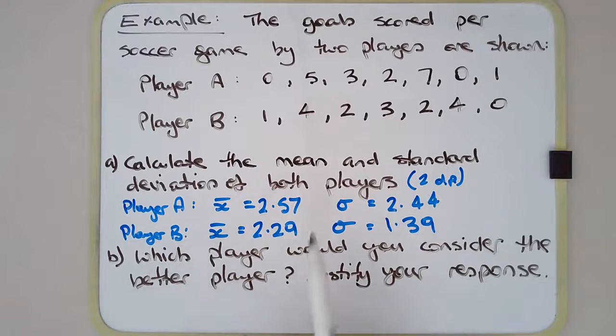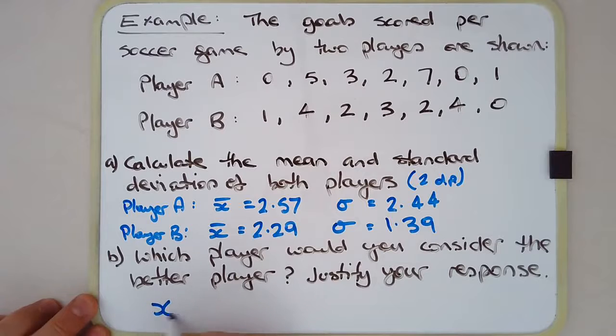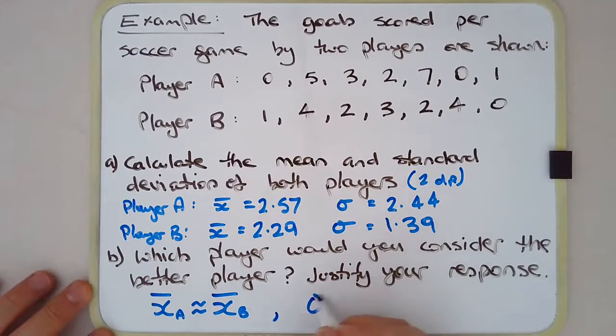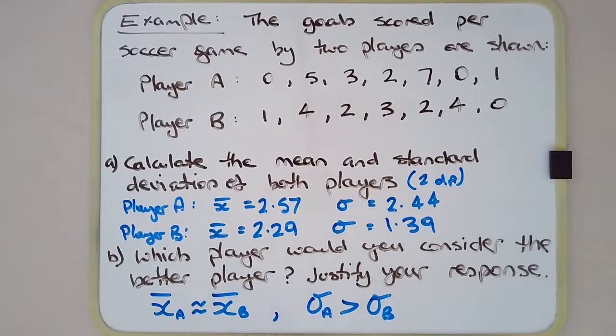But I think considering that the means are pretty close to each other—maybe I might write something here—the mean of Player A is roughly equal to the mean of Player B, I'd say they're fairly close. But clearly the standard deviation of A is definitely larger or significantly larger than the standard deviation of B.